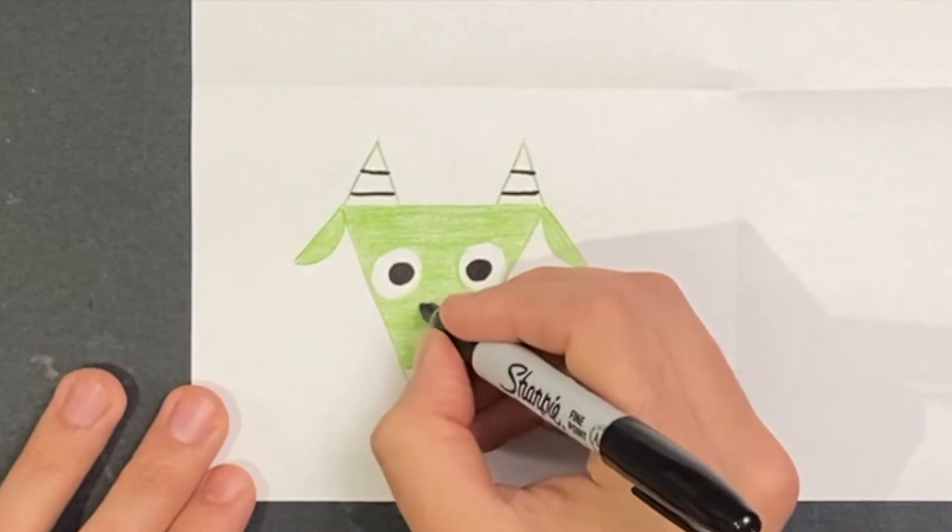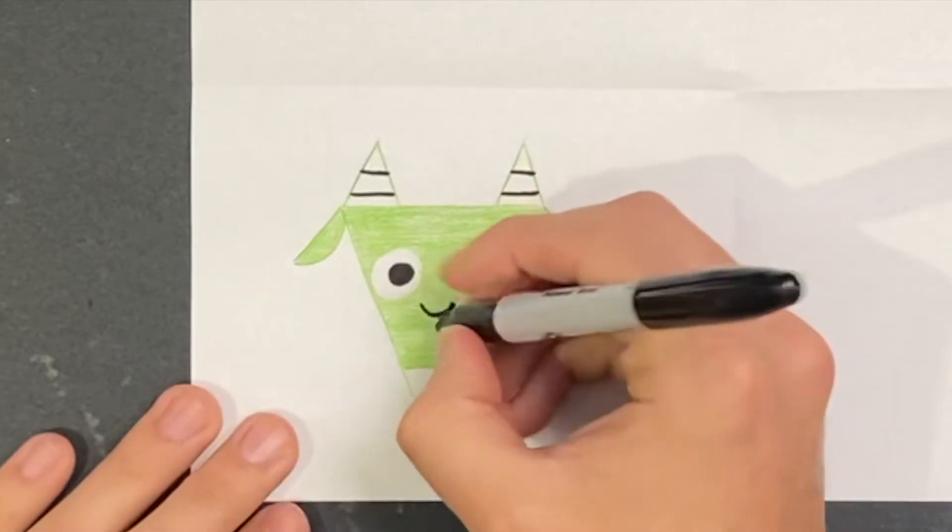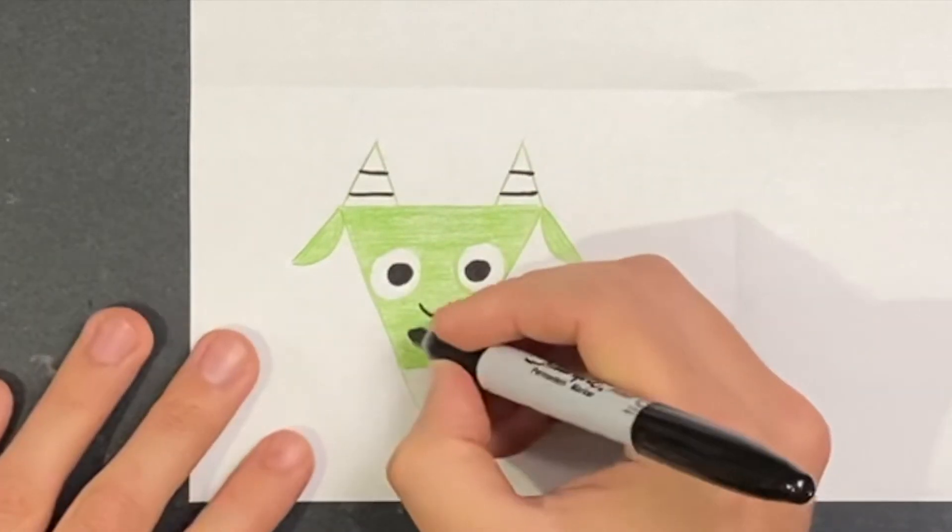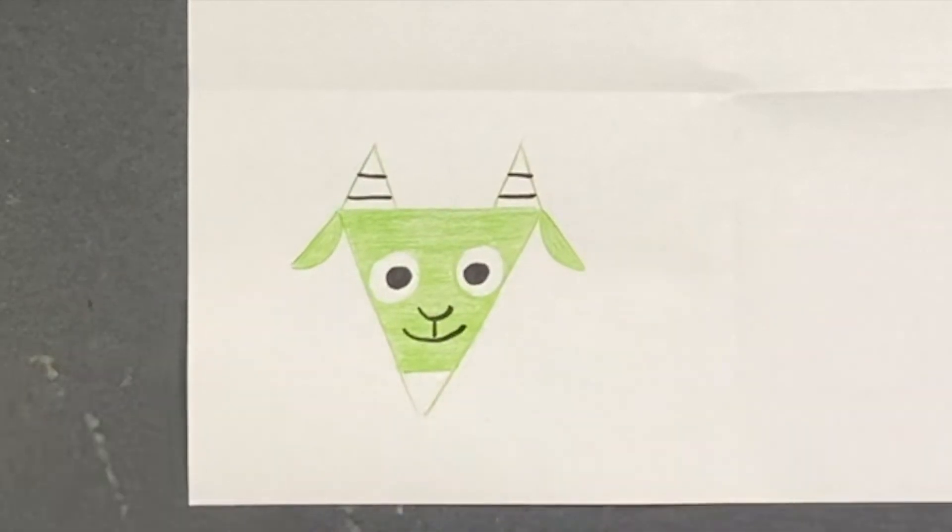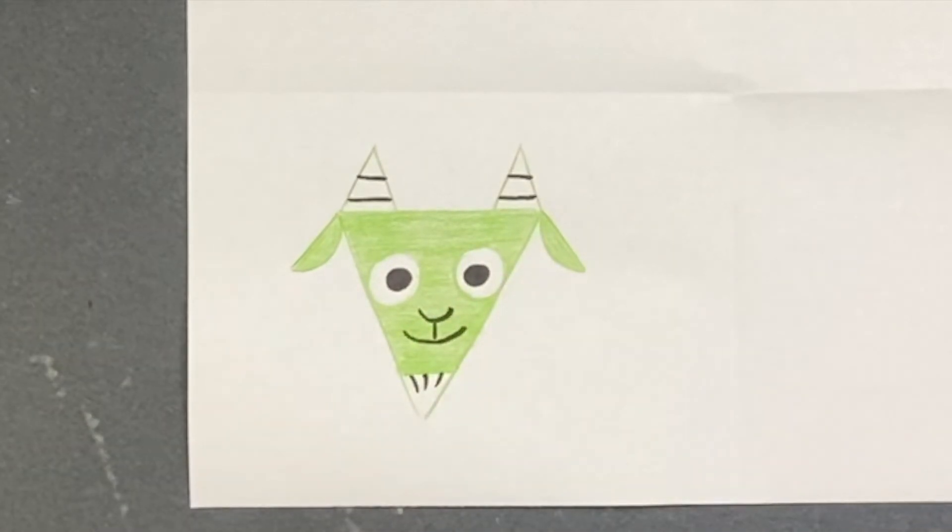Now, for the nose, I'm going to do a little baby letter U, and then a vertical line from the letter U down, and then a bigger letter U, a curved line that makes a smiley face. And then three small lines, because goats have these little beards. That's right. It's a goat.